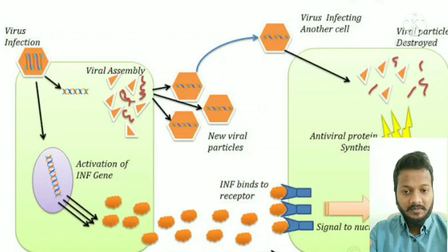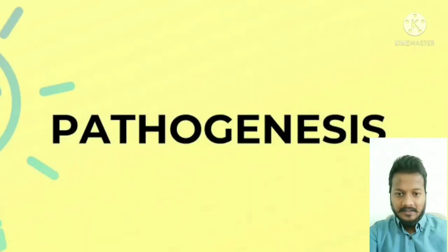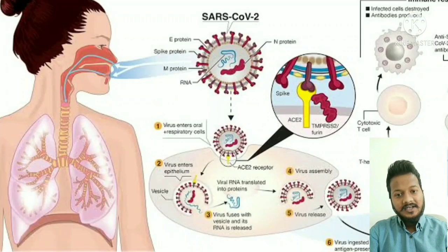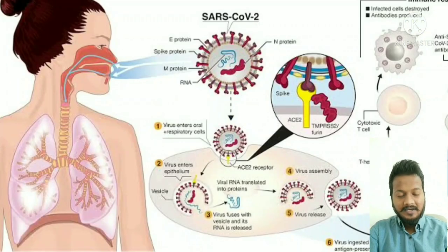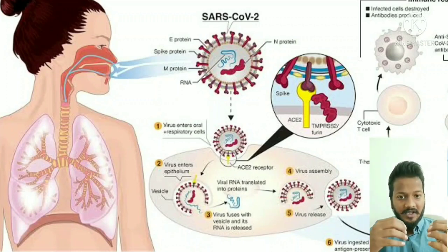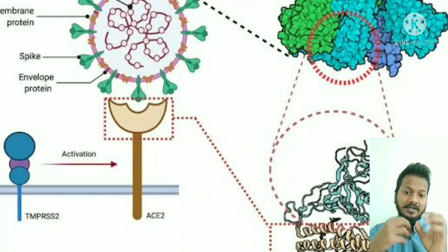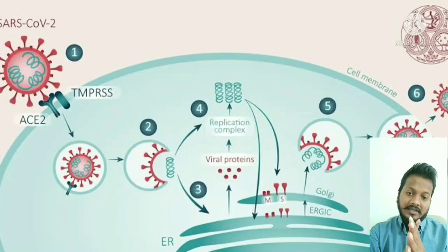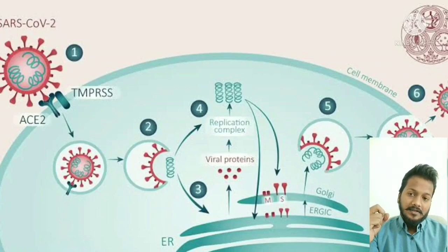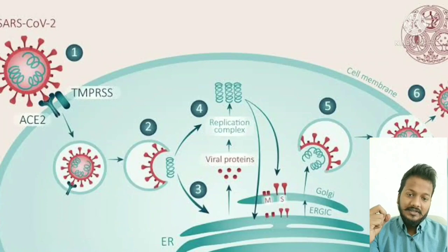Let us look at the pathology of COVID infection. Initially, the virus settles in the nasal epithelium and starts replicating. As time progresses, it moves down and reaches the alveoli. In the alveoli, the virus with spike glycoprotein attaches to the ACE2 receptor located on Type 2 pneumocytes. Thereafter, viral replication starts — involving attachment, penetration, uncoating, biosynthesis, maturation, and finally exocytosis.